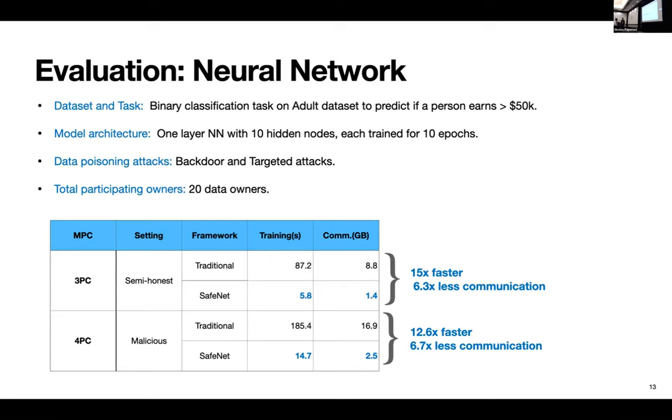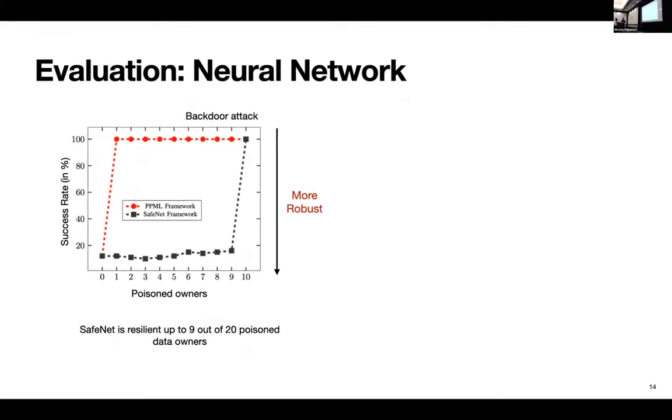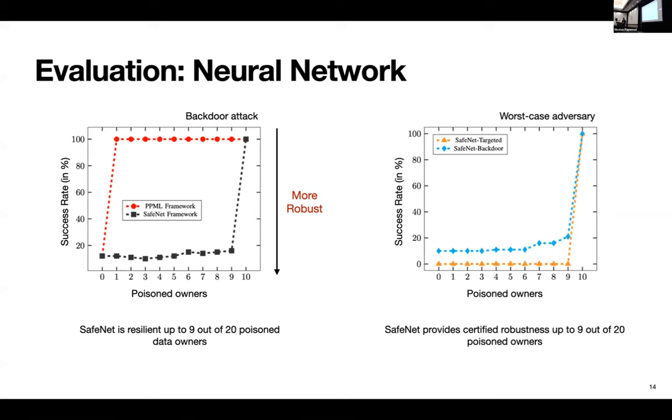So I show one such evaluation here where we test on one layer neural network with 10 hidden nodes for both targeted and backdoor attacks and in the presence of 20 data owners participating here. So for the first two metrics we observe, say for three PC framework, we observe that our training phase is 15 times faster and requires 6.3 times less communication. This primarily happens because we can train the models locally before submitting it to the MPC. You'll see similar improvements even for 4PC framework here. What happens in terms of attack success? So the traditional framework immediately breaks down when you introduce one poisoned owner here, whereas SafeNet is able to tolerate up to 9 out of 20 poisoned owners in this case. And even in terms of worst case adversary, we see that SafeNet holds well, where it's pretty much resilient up to 9 out of 20 owners for both backdoor and targeted attacks.